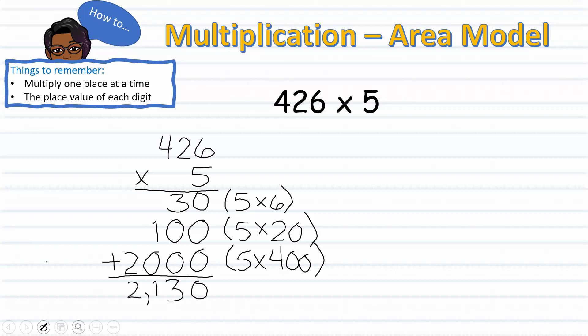After adding my partial products, I have 2130 as the answer. Therefore, I know that 426 times 5 equals 2130.